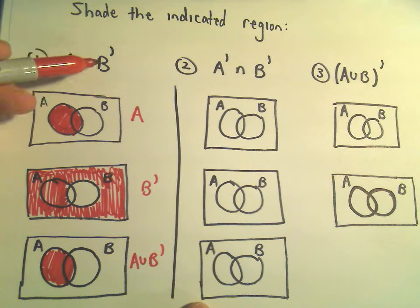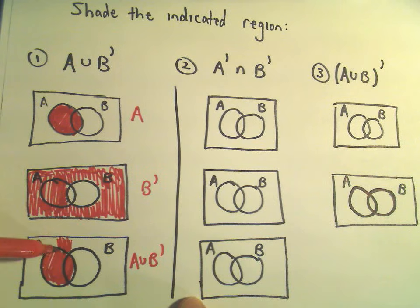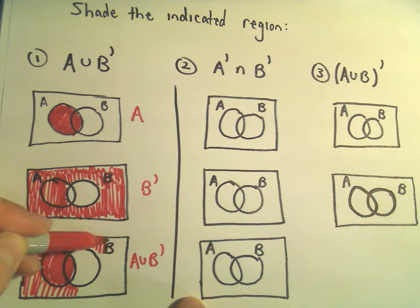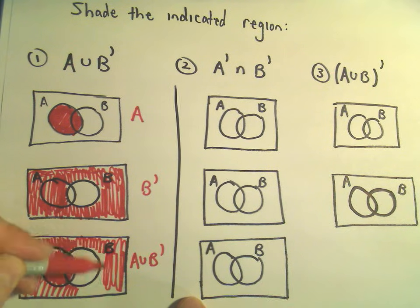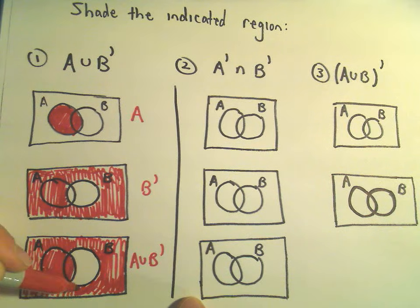We shade everything that's NOT B. So NOT B, we said, was everything outside of circle B. And now we've got our final Venn diagram.